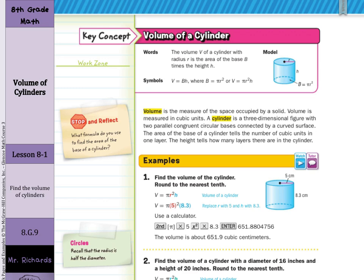As we stop and reflect: what formula do you use to find the area of the base of a cylinder? The base of a cylinder is a circle, so you can use area equals pi times the radius squared.